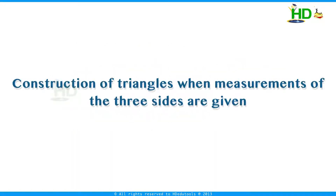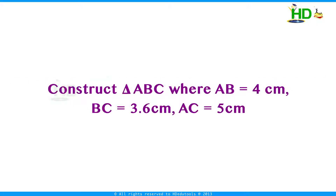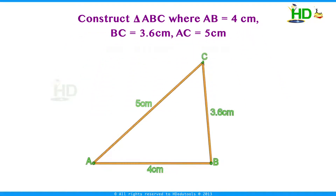First we take the construction of a triangle when the measurements of three sides are given. We take this example: construct triangle ABC where AB is 4 cm, BC is 3.6 cm, and AC is 5 cm. First we draw a rough sketch of the triangle and label it with the given measurements — AB is 4 cm, BC is 3.6 cm, AC is 5 cm.